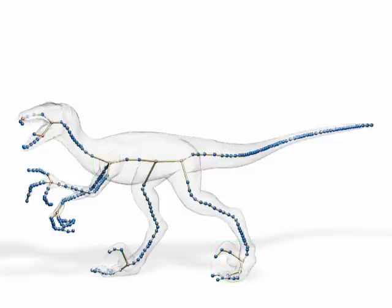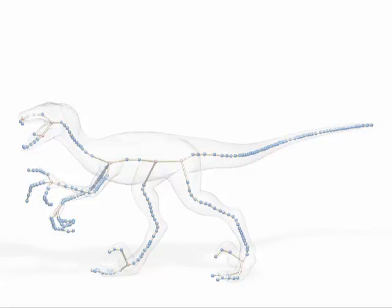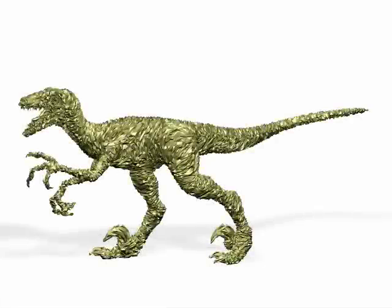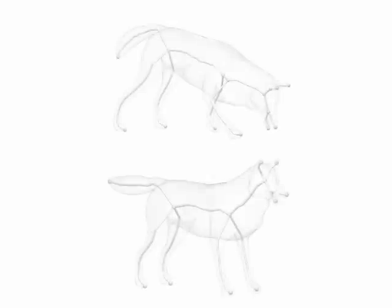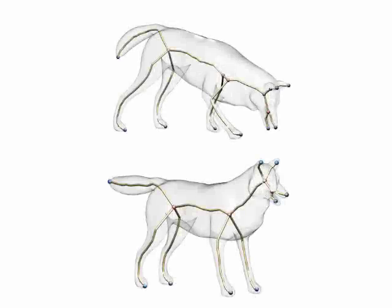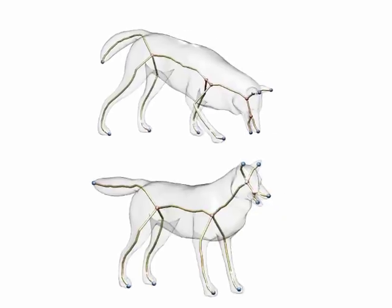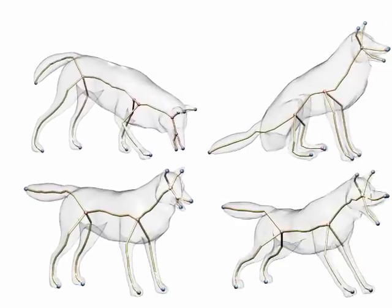Our skeleton extraction method has additional desirable properties. First, it is noise insensitive due to the use of implicit geometry smoothing to contract the mesh. Our method is pose insensitive since the geometric contraction depends only on the normal field of the mesh, which is locally invariant to local rotations. Our method is largely independent of the size and resolution of the mesh models.